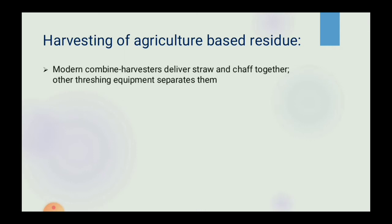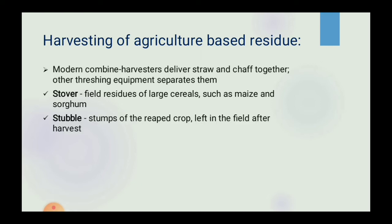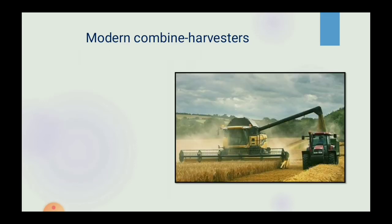Harvesting of Agriculture Based Residue. Modern combined harvesters deliver straw and chaff together, while other threshing equipment separates them. Field residues of large cereals such as maize and sorghum include stubble — the stumps of the reaped crop left in the field after harvest. The picture shows modern combined harvesters.